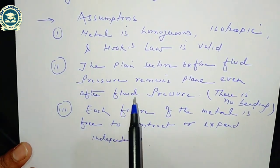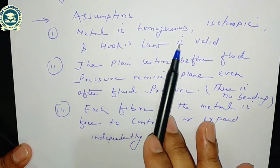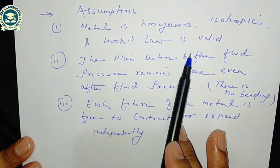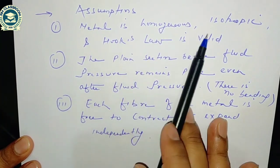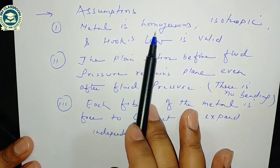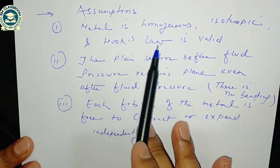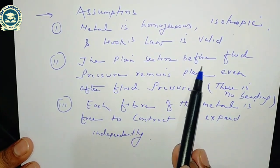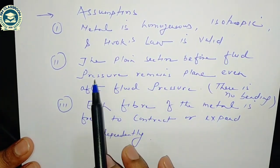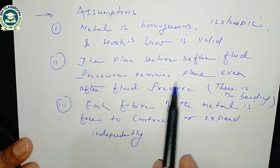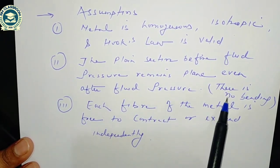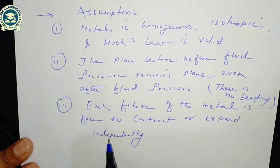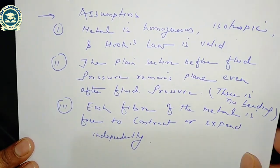These three assumptions by Lame's — homogeneous, isotropic, Hooke's Law valid — were already discussed in the first unit. The plane section before fluid pressure remains plain after fluid pressure, meaning no bending effect. Each fiber of the metal is free to contract or expand independently.